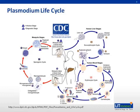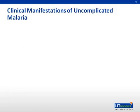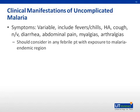This slide discusses the clinical manifestations of uncomplicated malaria. The symptoms of malaria are variable and include fever, chills, headache, cough, nausea and vomiting, diarrhea, abdominal pain, myalgias, and arthralgias. Because malaria is so prevalent, it should be considered in anyone with a fever who has recently been in an area in which malaria is endemic.